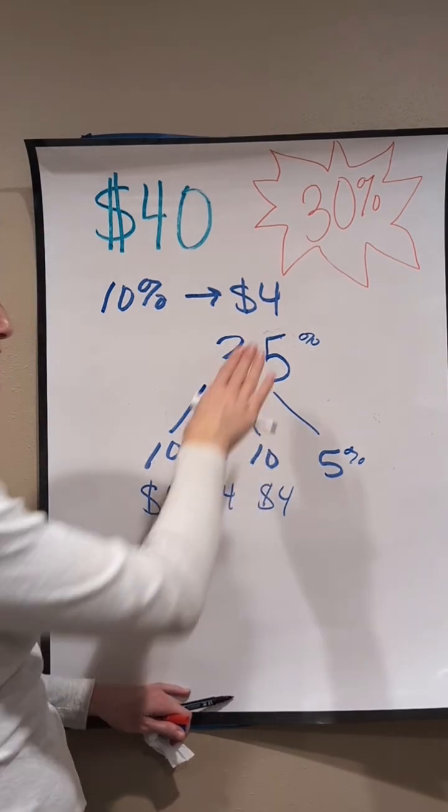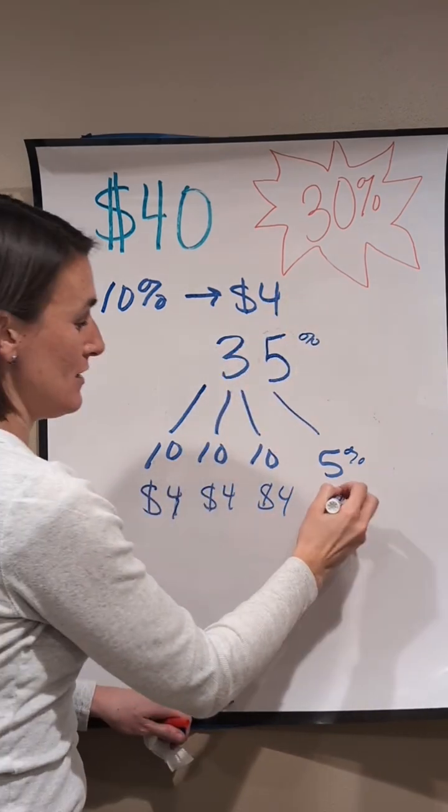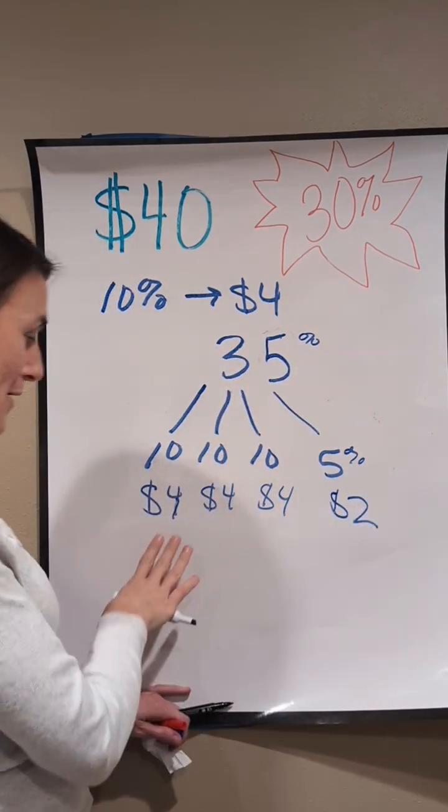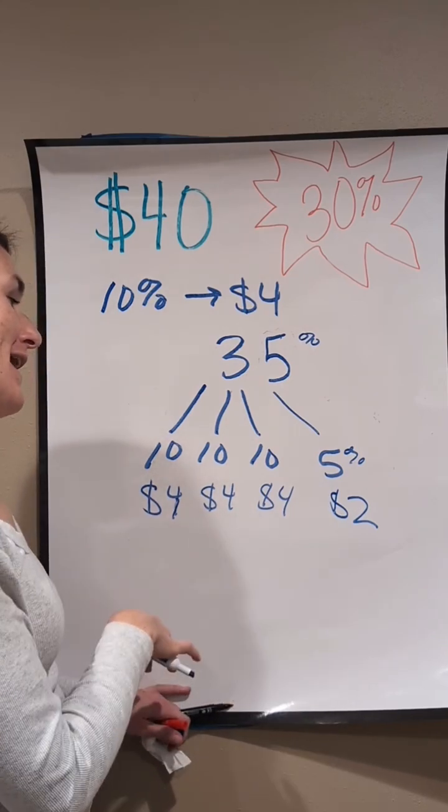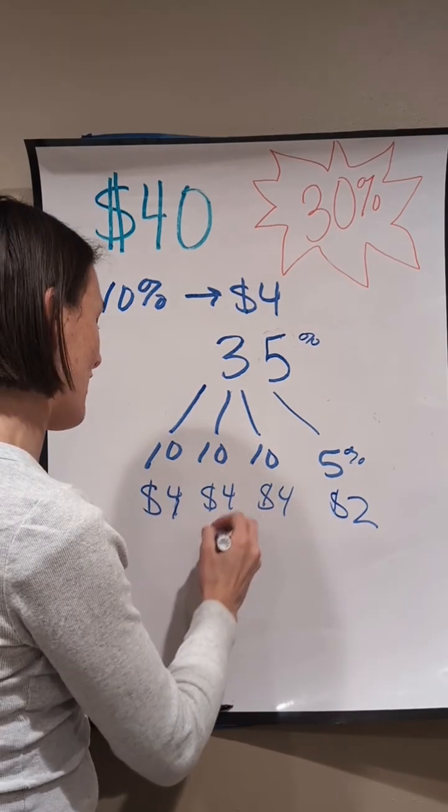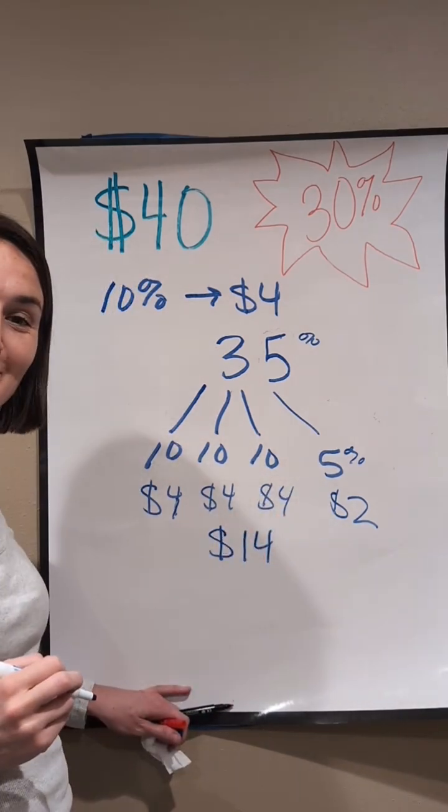So I can think, okay, half of this $4 would be $2. So now I have my $4, $8, $12, and then I have $2 more. So 35% would be $14 off.